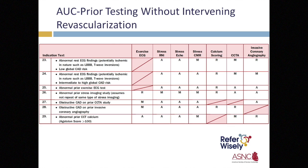The 2013 multi-modality appropriate use criteria for the detection and risk assessment of stable ischemic heart disease were developed to determine the appropriateness of different imaging modalities in 80 clinical scenarios. Exercise electrocardiography, stress radionuclide imaging, stress echocardiography, stress cardiac magnetic resonance imaging, coronary calcium scoring, coronary CT angiography, and invasive angiography are rated as appropriate, may be appropriate, or rarely appropriate in each of these clinical scenarios.